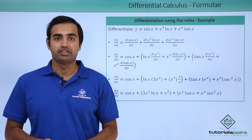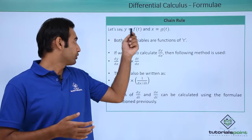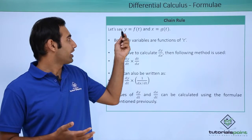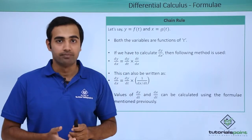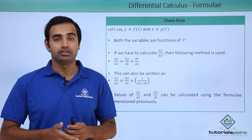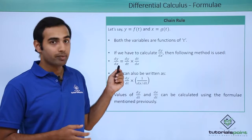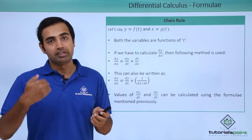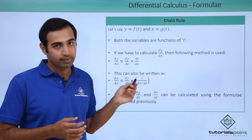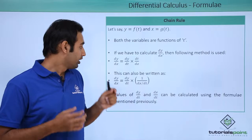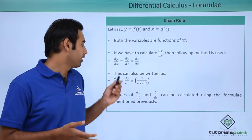Now let's talk about the next important rule in differentiation: the chain rule. The chain rule applies when y = f(t) and x = g(t) — meaning y varies with t as function f, and x varies with t as function g. To calculate dy/dx I interpret it as dy/dx = (dy/dt)·(dt/dx), simply multiplying and dividing by dt. This can be written as dy/dx = (dy/dt) · (1/(dx/dt)). Because I know the functions for y vs. t and x vs. t, I can easily calculate these individual derivatives and finally obtain dy/dx.